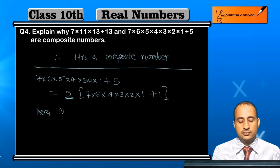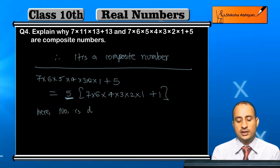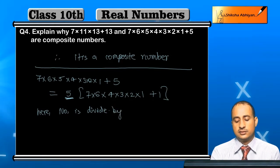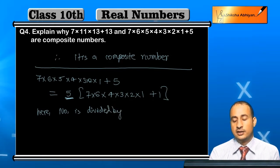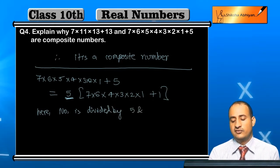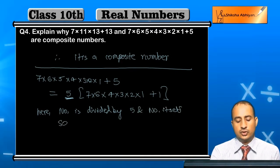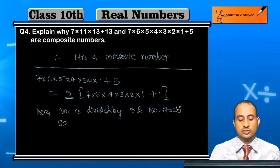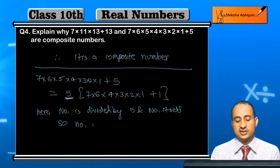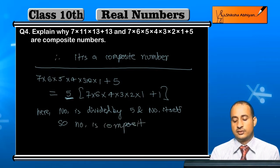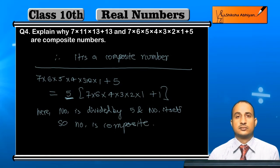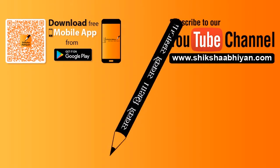The number is divided by 5 and the number itself. Therefore, it is a composite number.